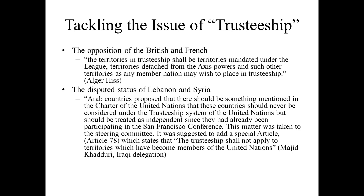In order to get the trusteeship council on board for a modern UN, US diplomat Alger Hiss was very adamant about suggesting that, quote, 'the territories in trusteeship shall be territories mandated under the League, territories detached from the Axis powers, and such other territories as any member nation may wish to place in trusteeship.' The wording here was deliberately designed to get the British, and by extension the French, on board. It extended an earlier League understanding — that if you lost the war, you lost your colonies. Germany didn't have any at the time, but Japan was going to be faced with this, specifically with the issue of Manchuria, the island of Taiwan, and the Korean Peninsula. But this was meant to say to the British and the French: this will not touch your colonial holdings. So they were okay with that, and that suddenly got them to sign on.